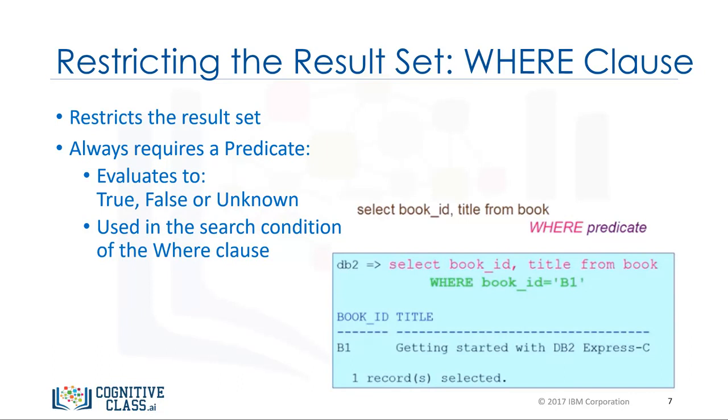So, if we need to know the title of the book whose book underscore ID is B1, we use the WHERE clause with the predicate book underscore ID equals B1. Select book underscore ID, title from book where book underscore ID equals B1. Notice that the result set is now restricted to just one row whose condition evaluates to true.